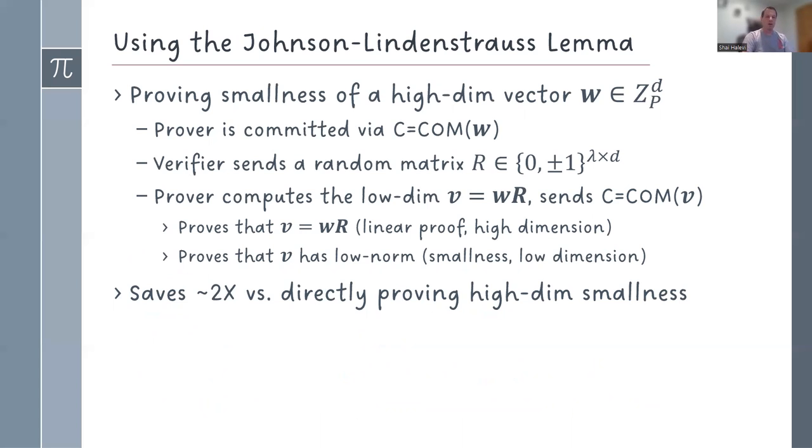Let me describe something slightly more interesting, and this is how you prove smallness of a very high dimension vector. So suppose we have a vector of dimension d, which is really huge. If I wanted to prove L2 norm the way I just described, then I need to have a quadratic proof for a dimension d vector. And that's expensive. I want to save a little bit. So what I do is the verifier will send a random small matrix of entries zero and plus minus one, which is a compressing matrix. It's security parameter by d. The prover computes the low dimension vector v as w times r and commits to it. And then the prover proves two things. One is that v, the committed vector v is indeed equal to the committed vector w times r. That's just a linear proof at a high dimension, but linear, not quadratic. So half the cost. The other one is it proves that v has low norm. This is a smallness proof, essentially quadratic, but low dimension. So it doesn't cost a lot.